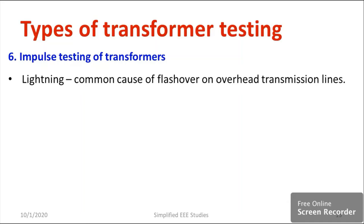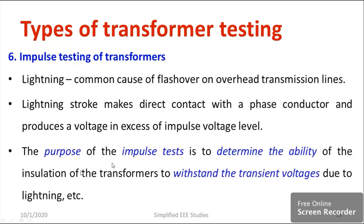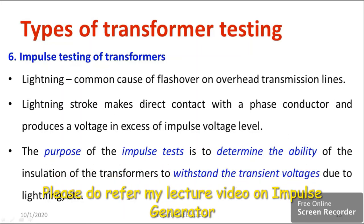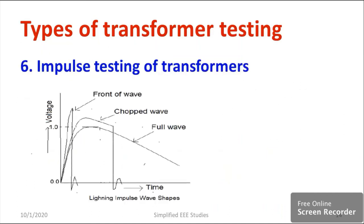The main purpose of impulse testing is to determine the ability of the transformer insulation to withstand transient overvoltage during lightning and thundering. To conduct impulse testing, we require an impulse generator. The lightning stroke makes direct contact with the phase conductor and produces voltage excess — an impulse voltage. We need to ensure what is the response of the transformer insulation during such events.